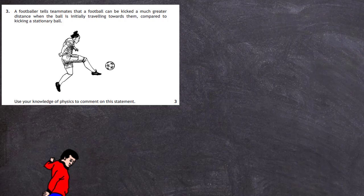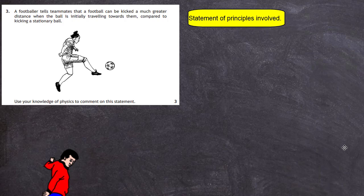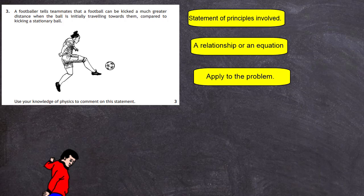So really there are three things we're looking for in this question. First, a statement of the principles involved — state that this is a question about the impulse given to a ball, whether it's stationary or approaching you. Second, a relationship or equation: ft = mv − mu from your data sheet. Third, you have to apply it to the problem — assume certain things and apply them to the equation.